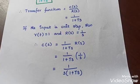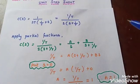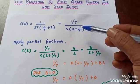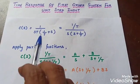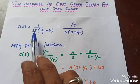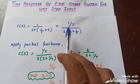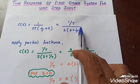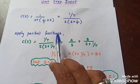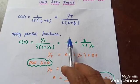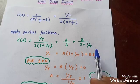Now we apply the partial fraction method. First, we bring the expression into the form S plus some value. Taking T outside, we get C(S) = (1/T) divided by S·(S + 1/T). Applying partial fractions: C(S) = A/S + B/(S + 1/T).